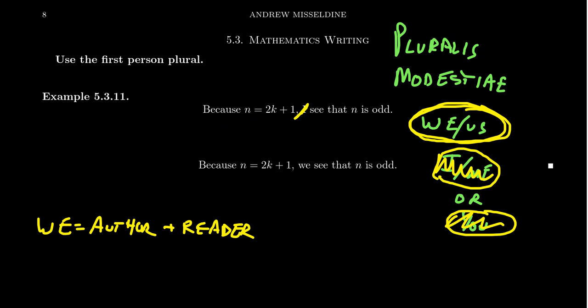Instead, we could say something like, because N equals 2K plus 1, we see that N is odd. We do it together.